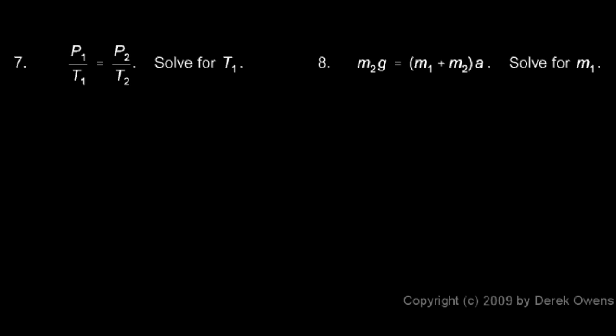In problem 7, we're given the formula P1 over T1 equals P2 over T2, and we're told to solve it for T1.